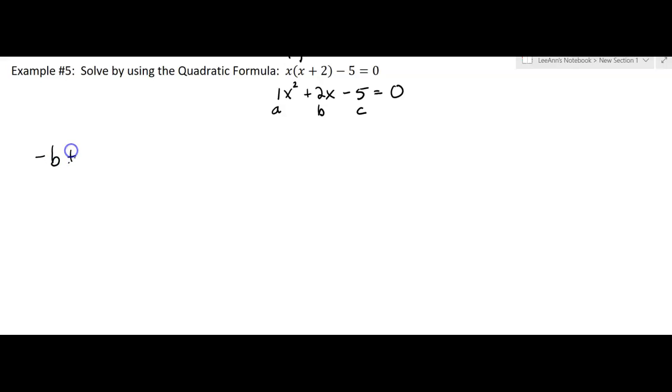And now here comes the formula. So the opposite of b plus or minus the square root of b squared minus 4ac all over 2a. And so what is b? b is 2, so it's going to be the opposite of 2 plus or minus the square root of 2 squared minus 4 times a which is 1 times c. Now make sure you make that a negative 5 because it's got to be a negative 5. It's going to make a big difference if we don't do that, all over 2 times 1.